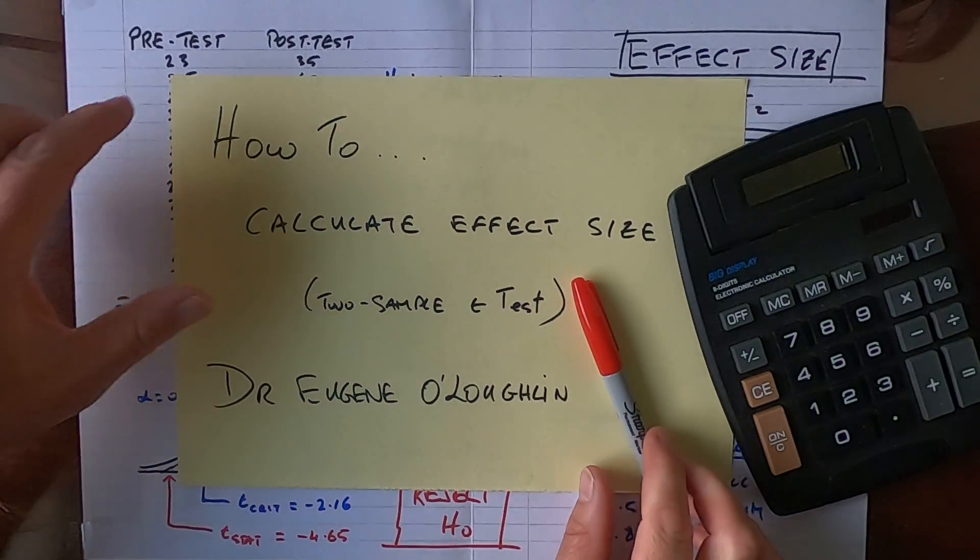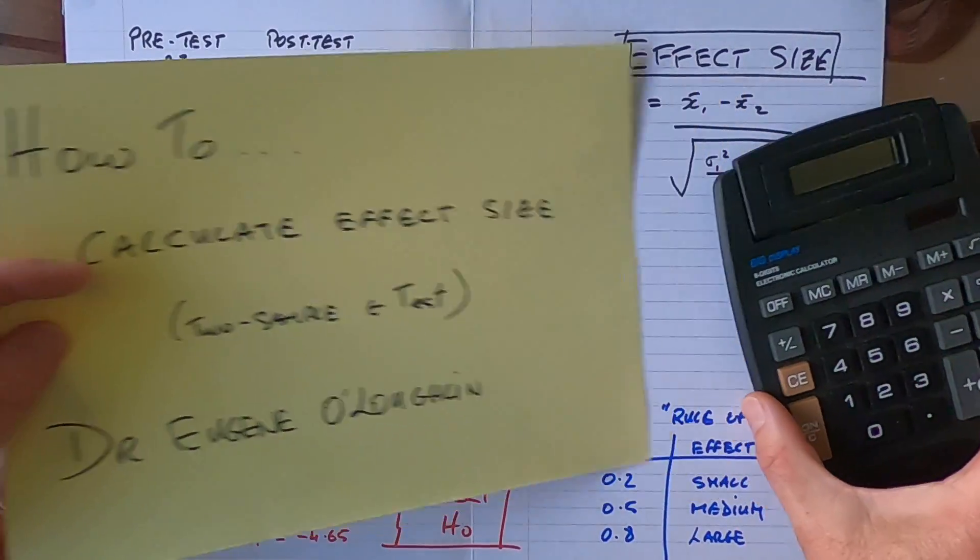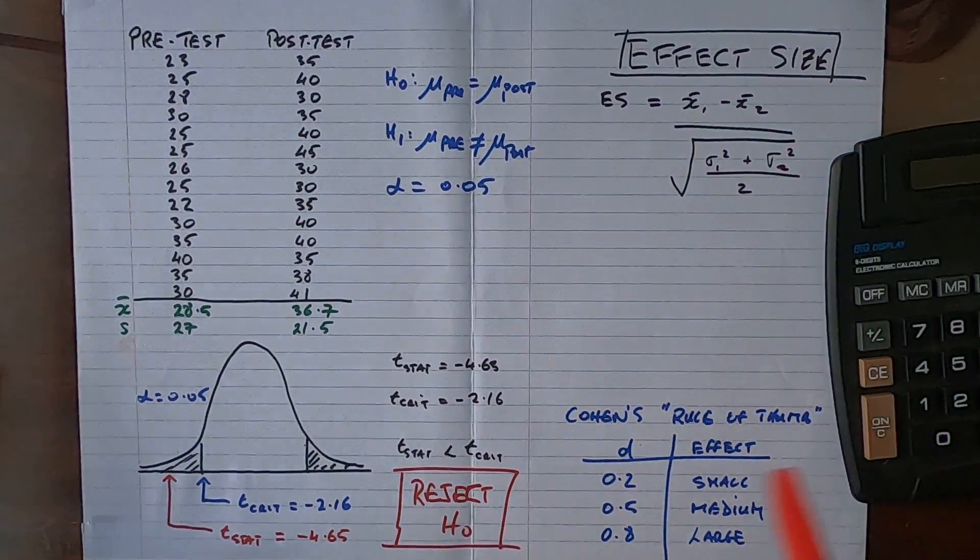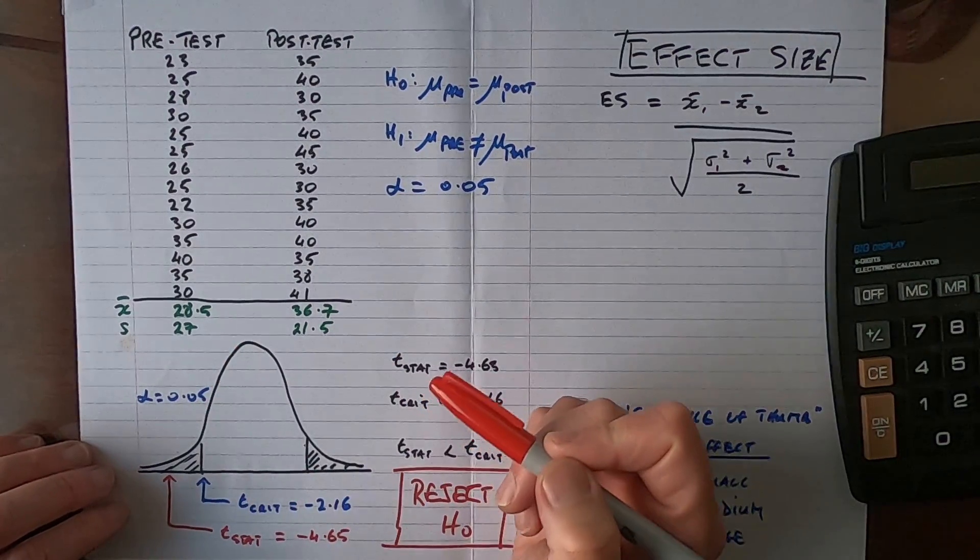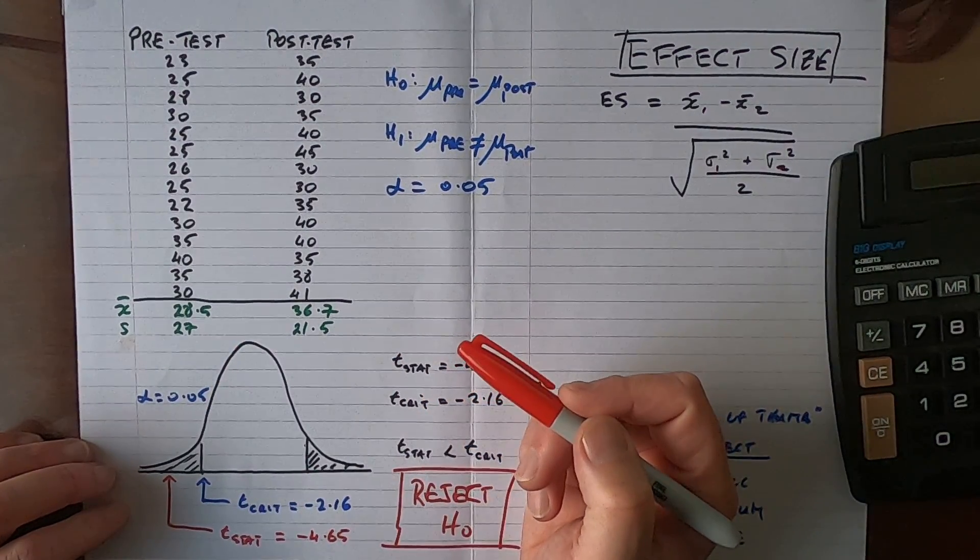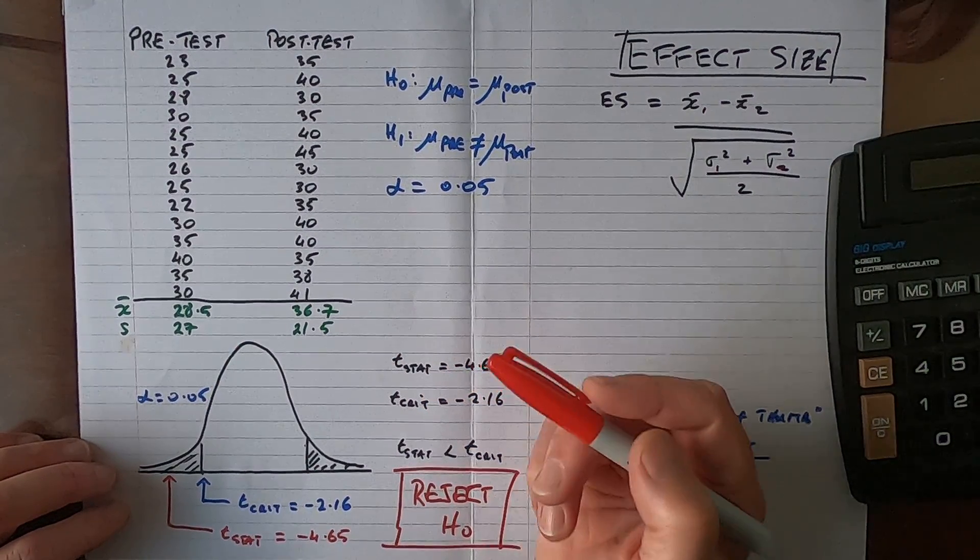Before we start, let's take a look at the results of a t-test which I have already carried out. This calculation for effect size works the same way for paired and unpaired tests or dependent or independent tests.